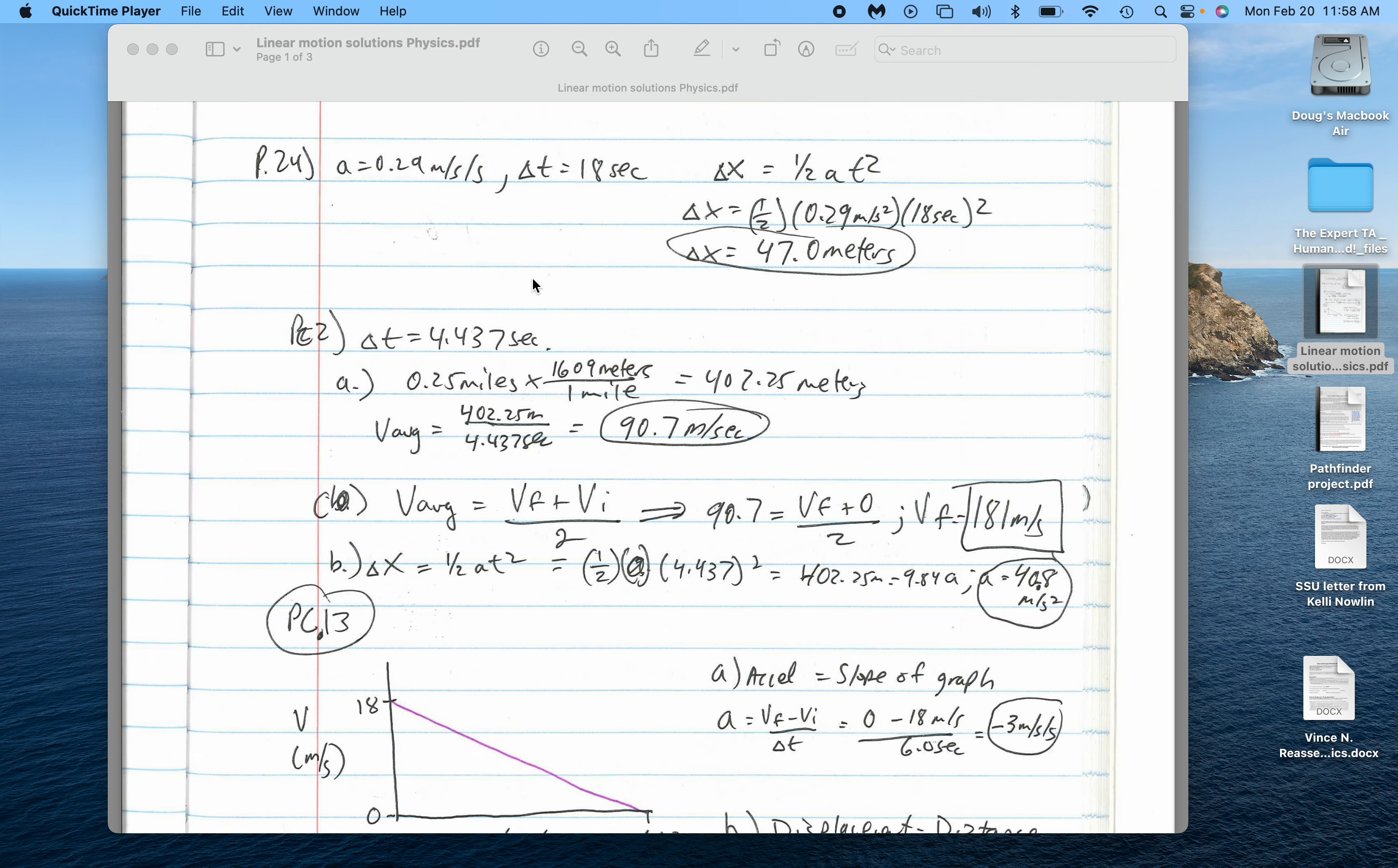For problem number two, there's a couple ways you could have done this. Talked about a funny car going a quarter mile race in 4.437 seconds, determining the average velocity, the average acceleration, the final velocity of the car.